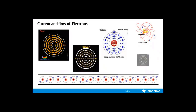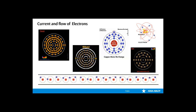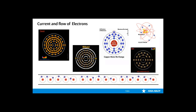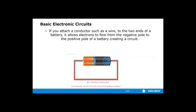The larger the atom, the more electrons in its orbits. Atoms such as copper, gold, silver, and aluminum have incomplete outer shells. Because the outer shell is incomplete, the atom has very little holding power to retain the electrons, allowing the electrons to move freely between atoms. Voltage is what pushes the electrons between the atoms. If you attached a wire to the two ends of a battery, it allows the electrons to flow from the negative terminal to the positive terminal, creating a circuit.